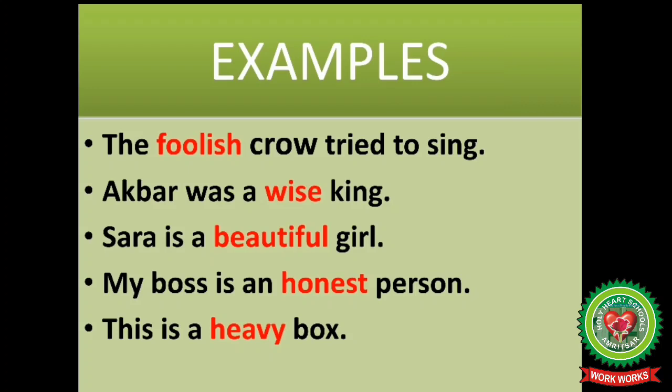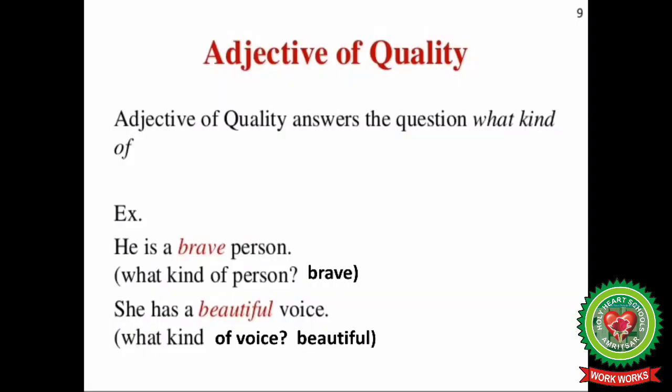So from this we come to know that adjective of quality answers the question 'what kind of'. Example: He is a brave person — what kind of person? Brave — so 'brave' is an adjective of quality. She has a beautiful voice — what kind of voice? Beautiful — so 'beautiful' is an adjective of quality.